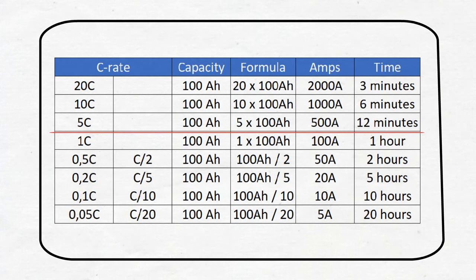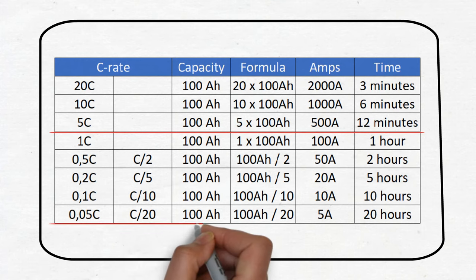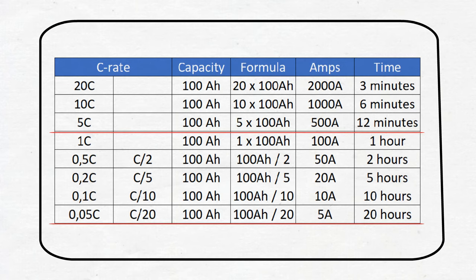If you look at a more realistic example for a lead acid battery of C20 or 0.05C, we can see that the battery can supply 5 amps for 20 hours before it's completely drained. In theory, that would only last 10 hours because we don't want to drain a lead acid battery to a 0% state of charge.